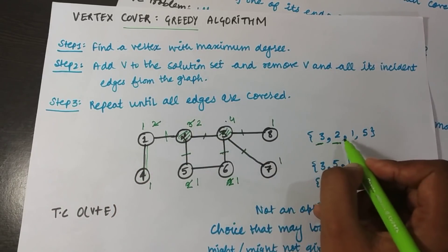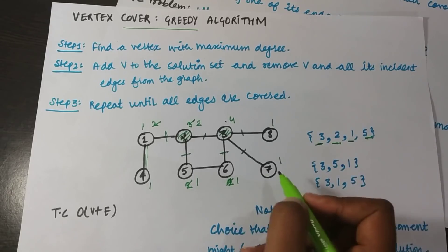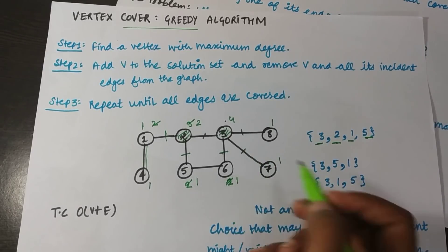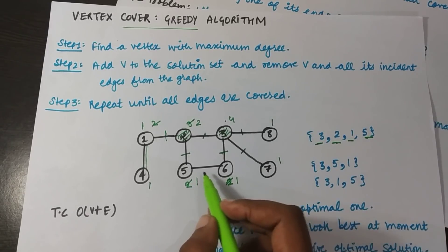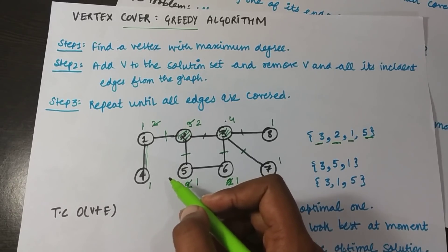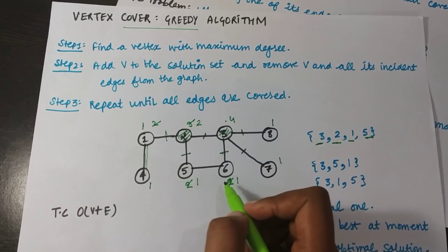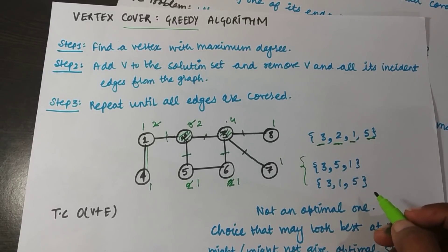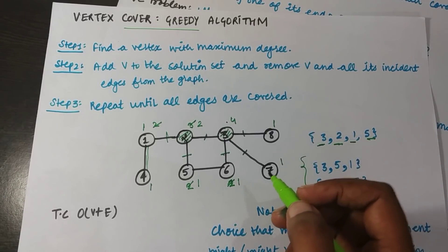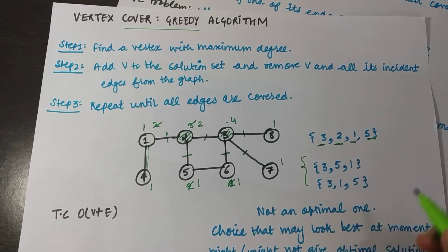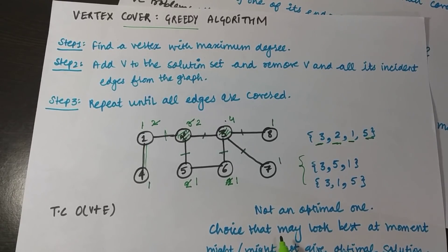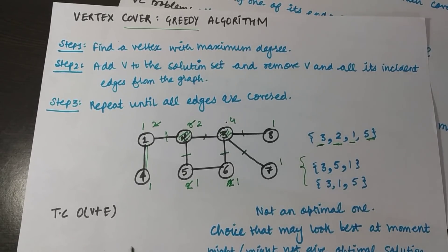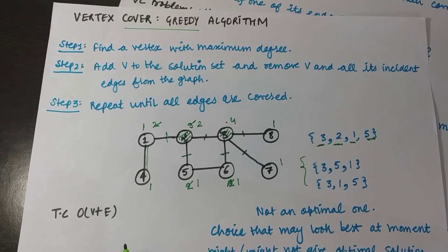From the remaining two disconnected edges, each has degree 1, so I can choose either endpoint. I choose vertex 1 from one edge and vertex 5 from the other. This greedy approach does not guarantee an optimal solution — by choosing different vertices I get different solutions. For instance, instead of vertex 5 I could choose vertex 6, or instead of vertex 1 I could choose vertex 4. The time complexity of this greedy approach is O(V + E), where V is the set of vertices and E is the set of edges.